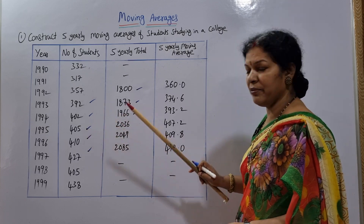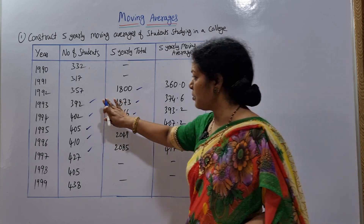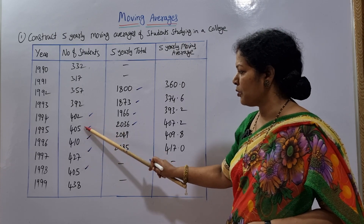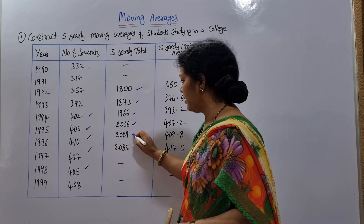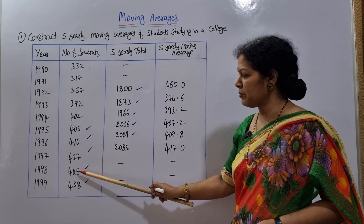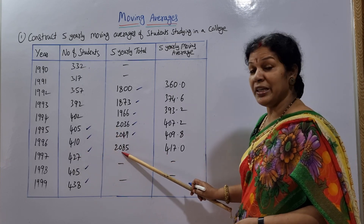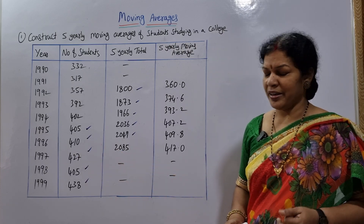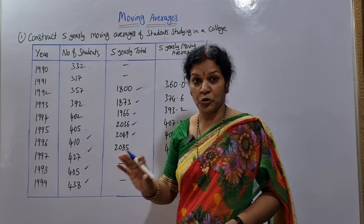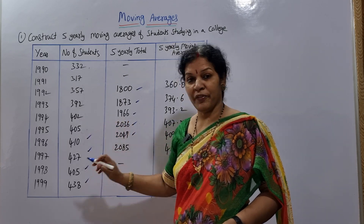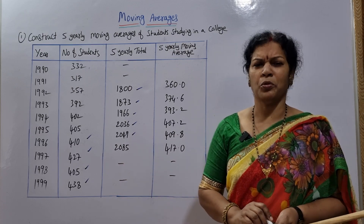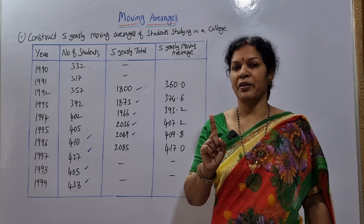Continuing: 392, 402, 405, 410, 427 — the total is 2049, posted opposite to its middle. Next five: 402, 405, 410, 427, 438 — total is 2085, posted opposite to that middle. After this, we leave the last two rows blank because we don't have enough numbers remaining to form another group of five, so the last two entries stay empty.